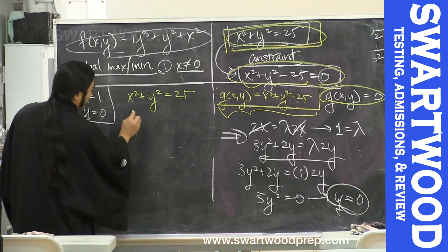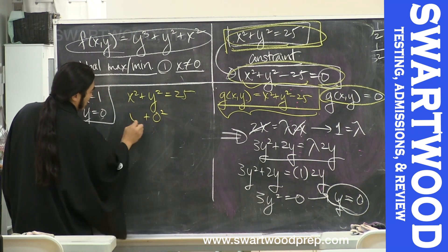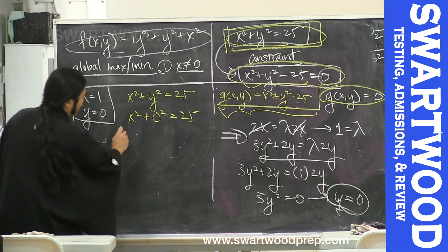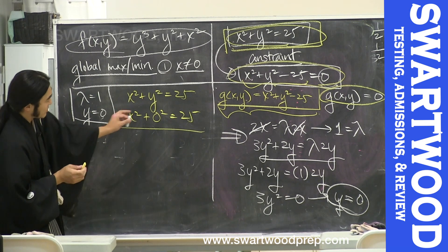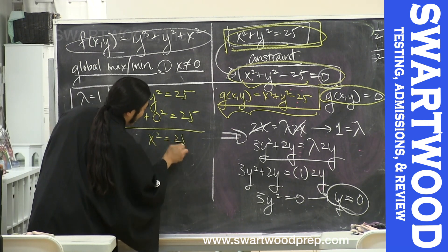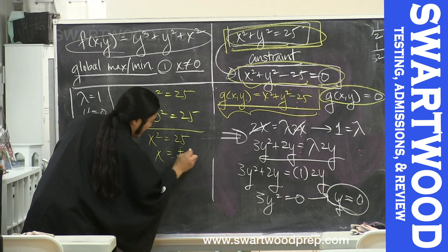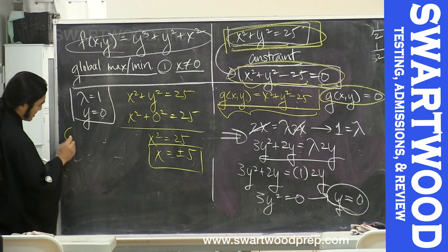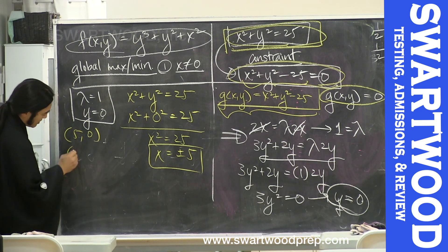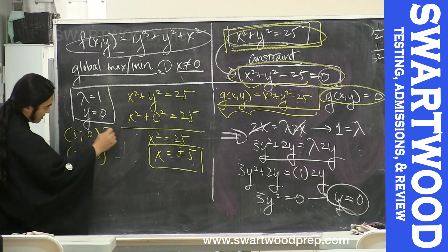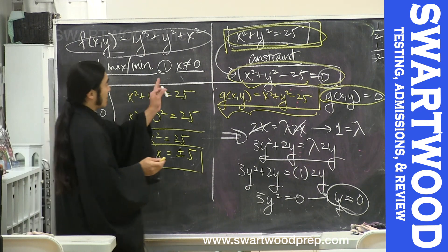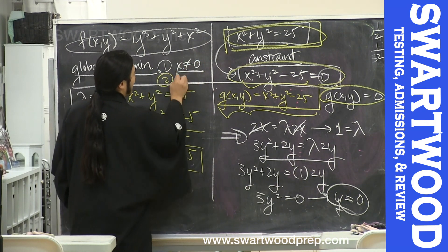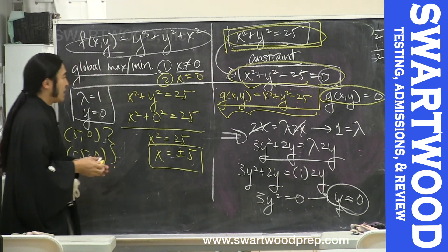Using the constraint x squared + y squared = 25 with y = 0: 0 squared + x squared = 25, so x squared = 25, meaning x = ±5. That gives us the points (5, 0) and (−5, 0).